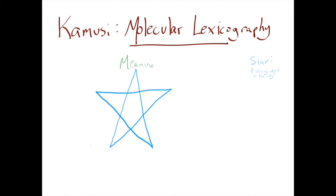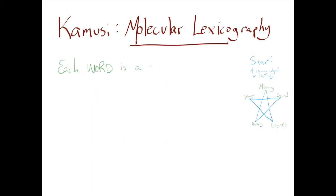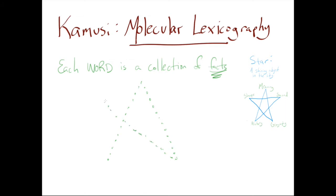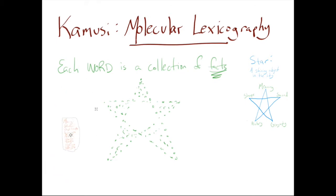A word like 'star' has meaning, it has a shape or shapes, it has a sound, and it also has history and geography — where it's spoken. What we start to see is that each word is really a collection of facts. So beneath the notion of meaning, there's the definition, but there are also usage examples, synonyms, antonyms, and a whole bunch of other things.